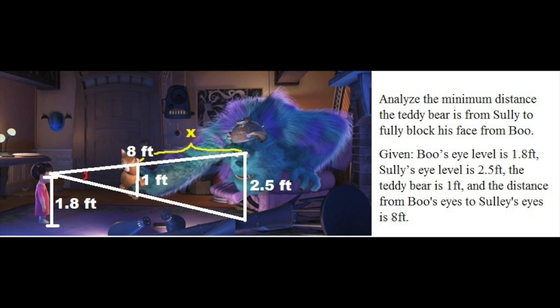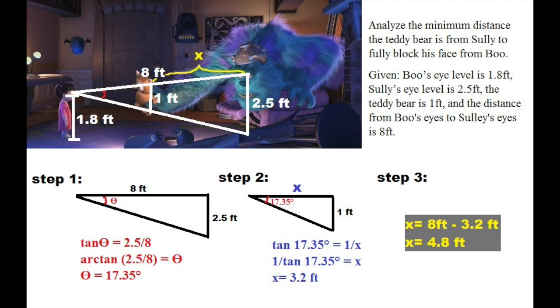Another example is when Sully is blocking his face from Boo with a teddy bear. Now, analyze the minimum distance the teddy bear is from Sully to fully block his face from Boo. Given that Boo's eye level is 1.8 feet, Sully's eye level is 2.5 feet, the teddy bear is 1 foot, and the distance in between them is 8 feet. From the first triangle, you will solve for the angle. Since you are given the opposite over adjacent, you will use tangent of θ equals 2.5 divided by 8. To solve for the angle, you use arctan or inverse tan of 2.5 divided by 8, and you will get that the angle measures 17.35 degrees.